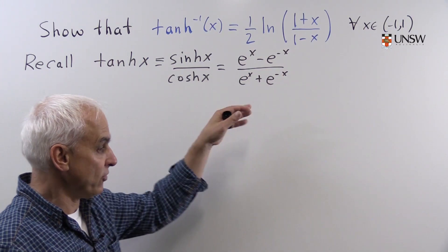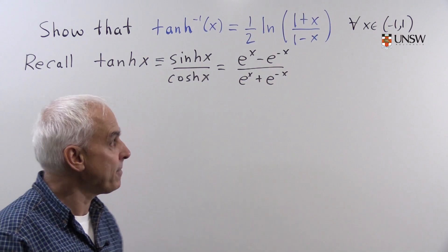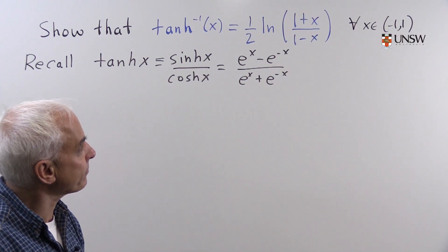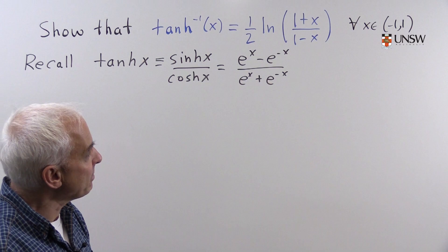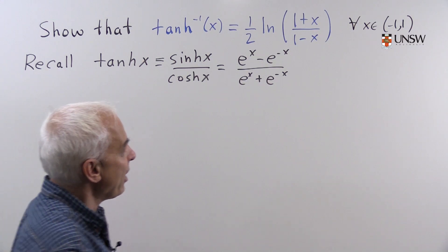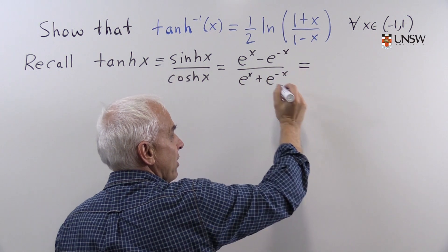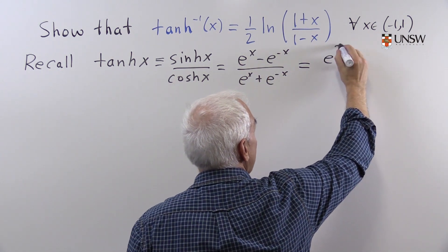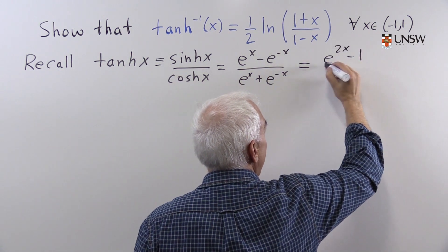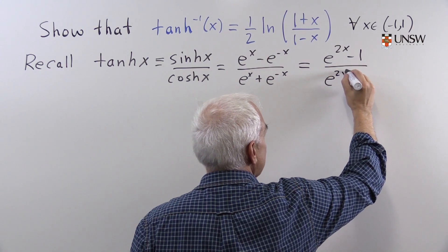When we take the ratio, those over 2s go away. We just have this expression here. It can be simplified somewhat by multiplying top and bottom by e to the x, which will get rid of the e to the minus x and give us e to the 2x minus 1 over e to the 2x plus 1.